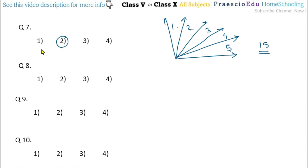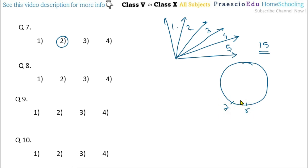Question number 8: what type of angle is made between the hands of a clock when the hour hand is between 6 and 7? The hour hand is near 5 and the minute hand is on 12. The angle formed is an acute angle, so option number 1 is the correct one.